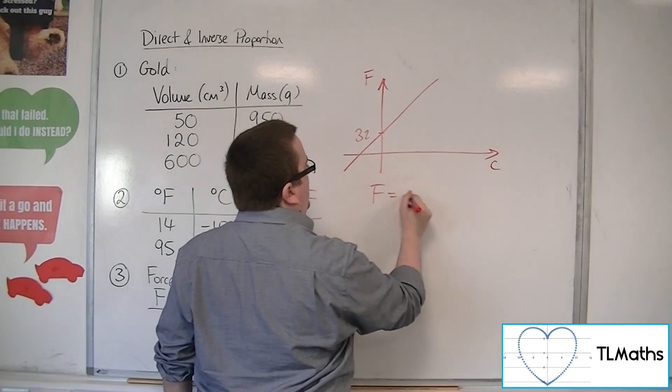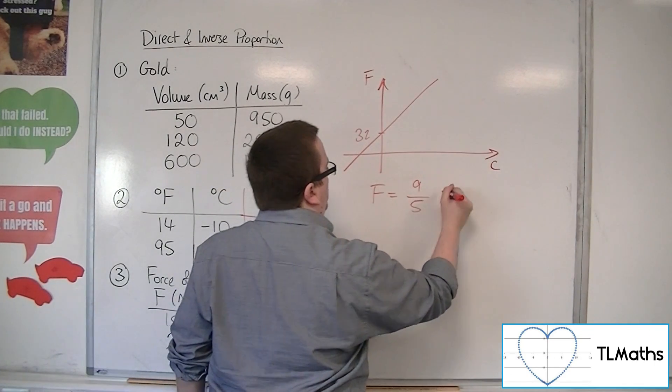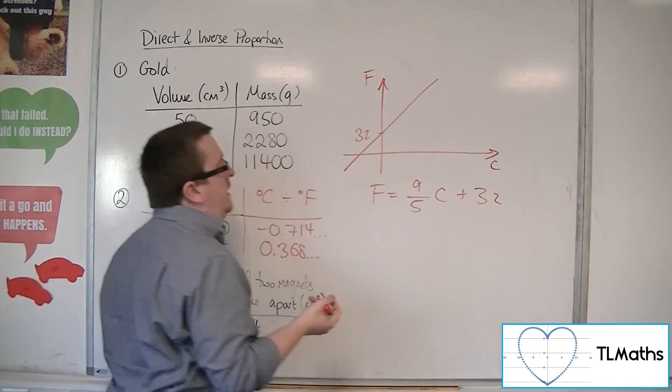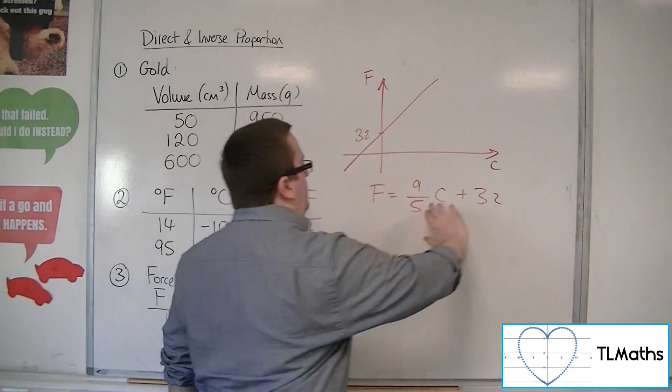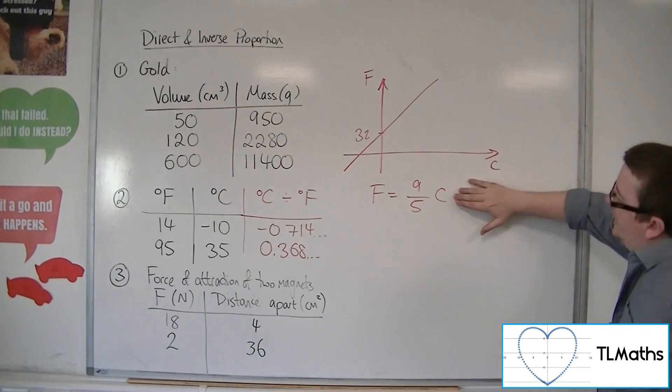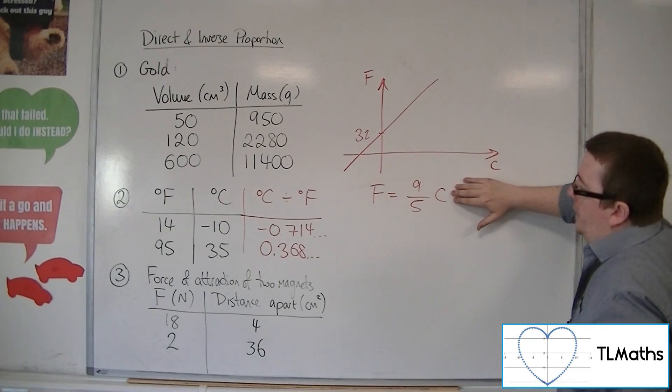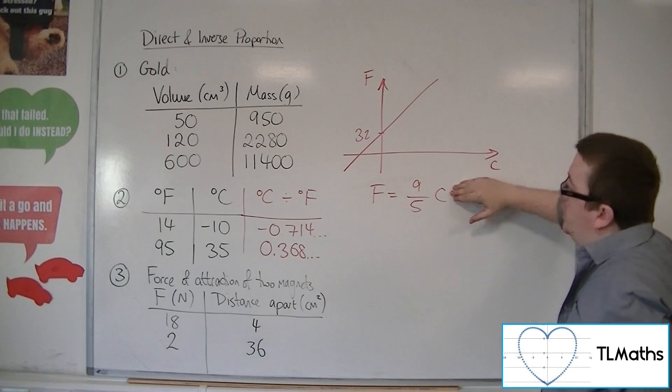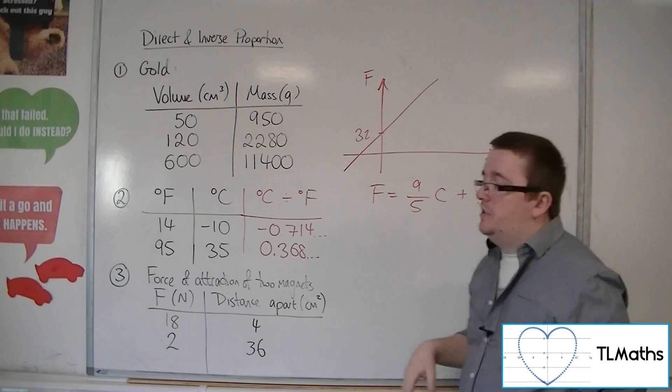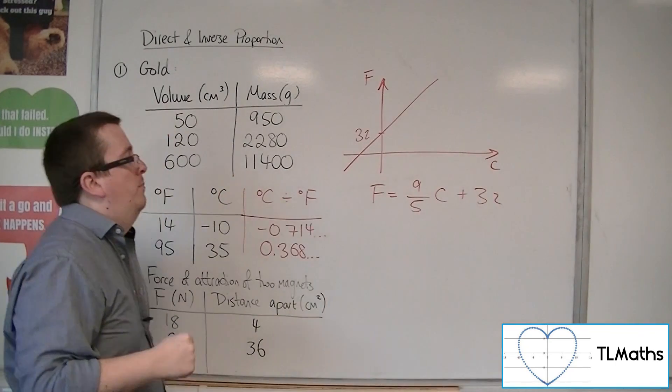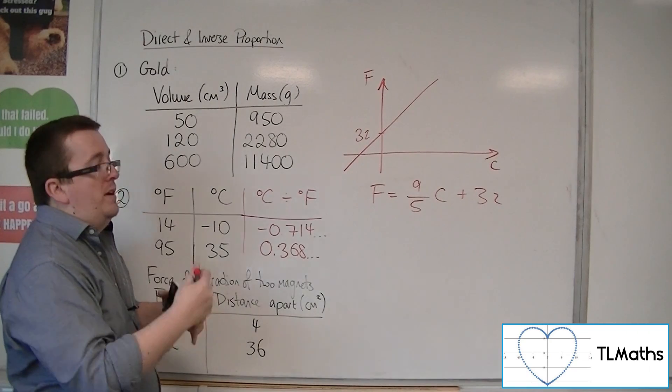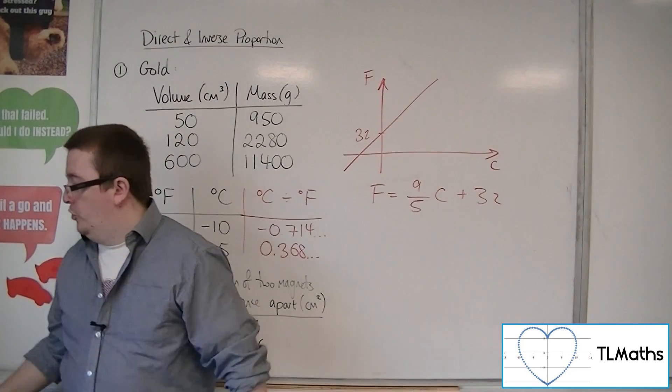And Fahrenheit is actually given by 9/5 times C plus 32. So although it's got this positive gradient, and the fact that you can see it would be directly proportional if this was the case, and it would be going through the origin, but because of that plus 32, it's not directly proportional. So that's just showing that centigrade and Fahrenheit aren't directly proportional in that example.